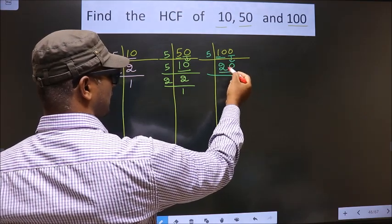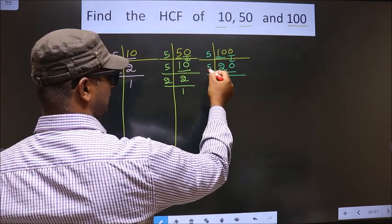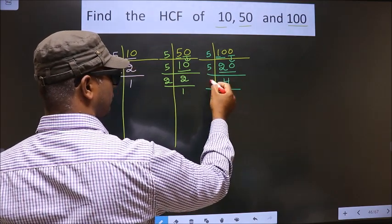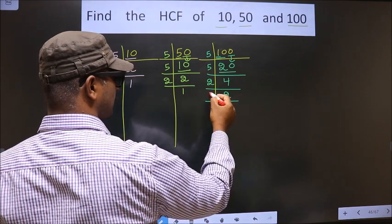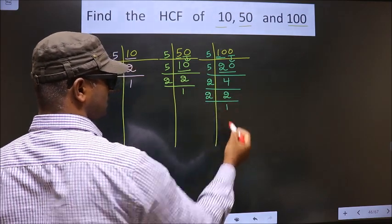Now we have 20. 20 is 5 times 4. 4 is 2 times 2. 2 is a prime number, so we take 2 once.